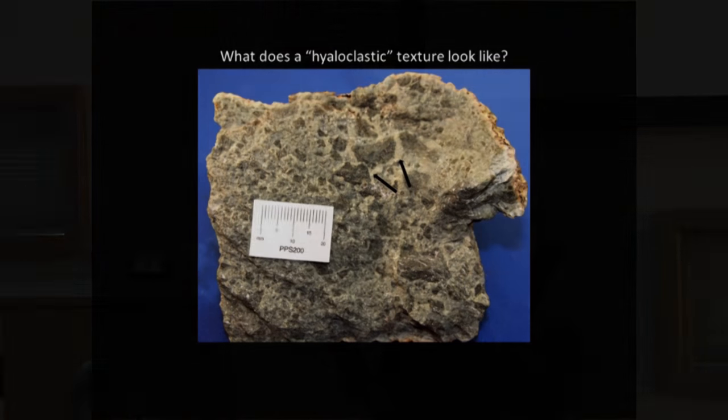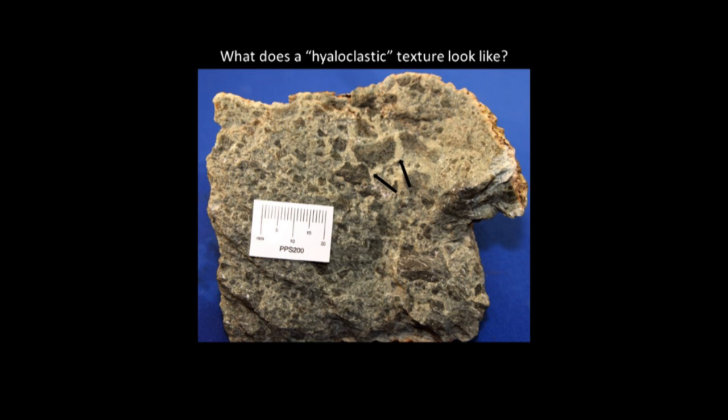The next characteristic clast type is a hyaloclastic clast. Fiamme are basically squashed pumice. Hyaloclastic clasts form when lava is flowing — the top surface cools faster, gets brittle, and as the center continues to flow it breaks that surface into clasts. The key feature of hyaloclastic texture is that it looks like some of the clasts could fit back together — a jigsaw fit. You can see where the arrows point: it's not a perfect jigsaw fit, but you can see how those clasts might have gone back together.